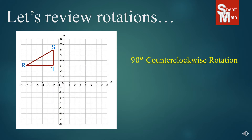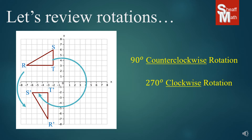Now you might have heard of counterclockwise. Counterclockwise is the opposite of the way that the clock goes. So if I was asked to do a 90 degree counterclockwise rotation, I would go the opposite way and end up here. Does that look familiar? The reason it looks familiar is because it's the same as a 270 degree clockwise rotation — they land in the same spot. We'll call them rotation partners.